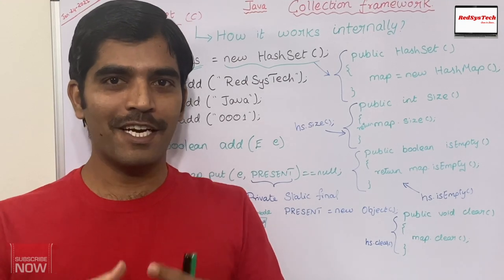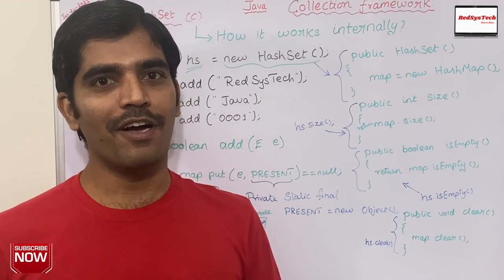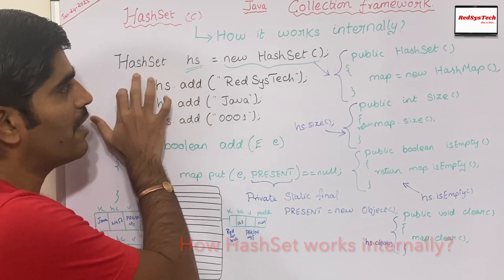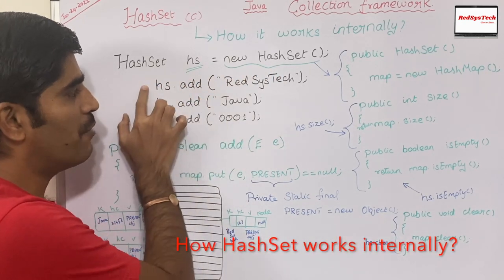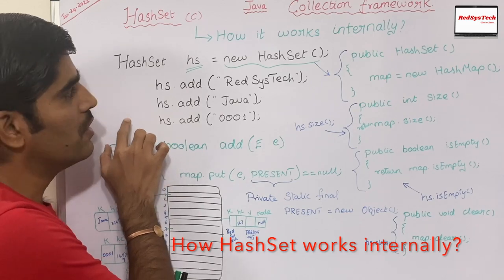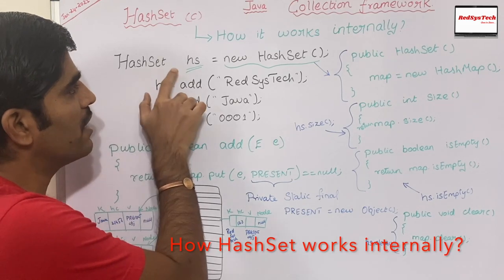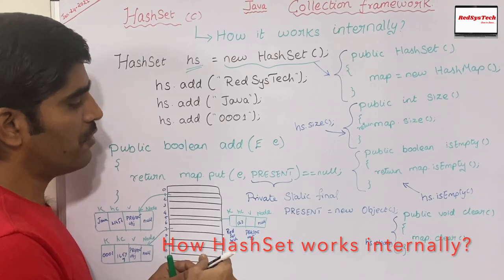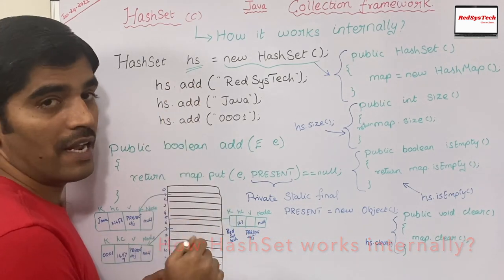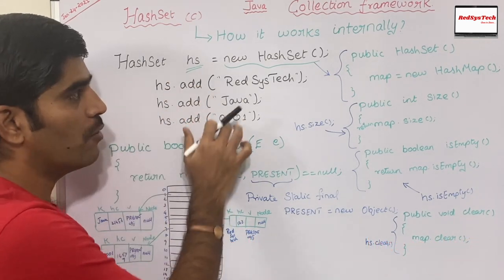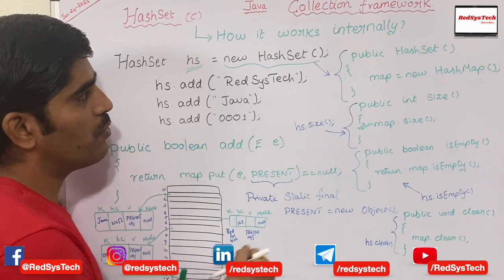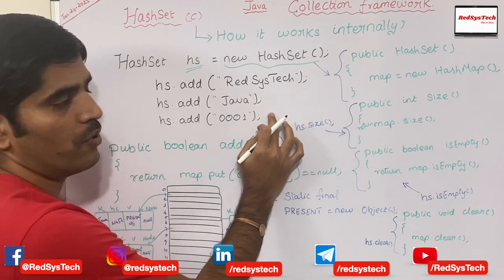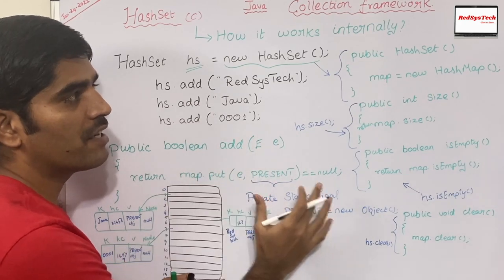To demonstrate how HashSet internally works in Java, I have written a simple Java program where I am creating an object for the HashSet class and then trying to add three objects into it. HashSet h is equal to new HashSet. Using the HashSet constructor, I am trying to create an object and add three objects: Redshift Tech, then Java, then 0001. Now let's see how it actually internally works.